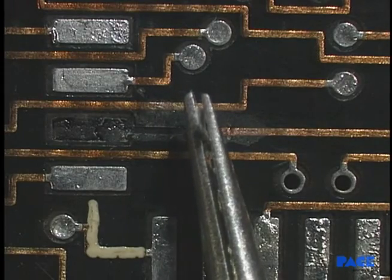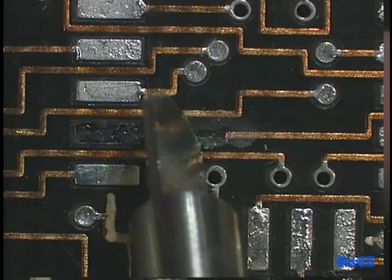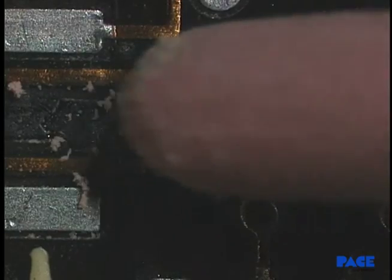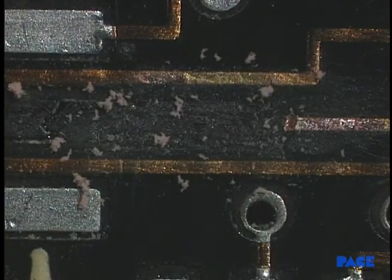Once the damaged land or trace combination has been carefully removed, roughen the board laminate using the Thermobon circuit's abrasive stick, maximizing the adhesive strength of the replacement circuitry to the board.